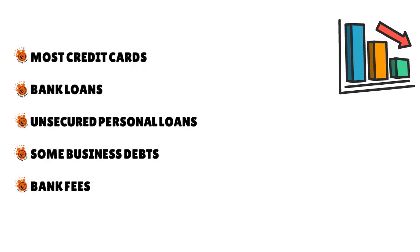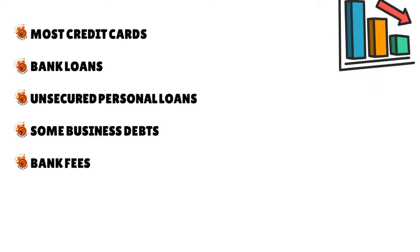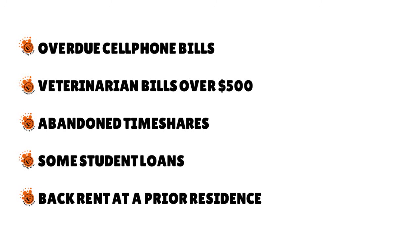National Debt Relief can reduce most bills. They work to reduce debt from the following sources: most credit cards, bank loans, unsecured personal loans, some business debts, bank fees, overdue cell phone bills, vet bills over $500, abandoned timeshares, some student loans, and back rent at a prior residence.